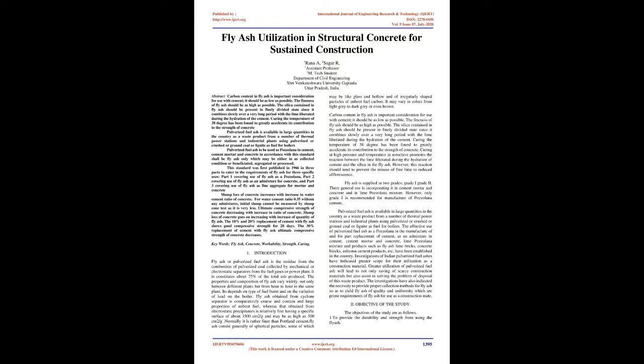Introduction. Fly ash or pulverized fuel ash is the residue from the combustion of pulverized coal, collected by mechanical or electrostatic separators from the fuel gases of a power plant. It constitutes about 75% of the total ash produced. The properties and composition of fly ash vary widely, not only between different plants but from hour to hour in the same plant.